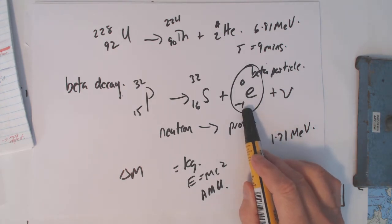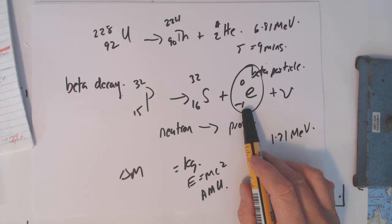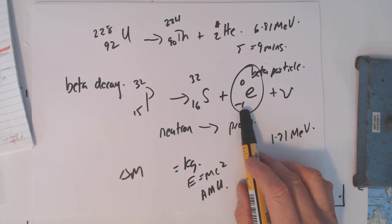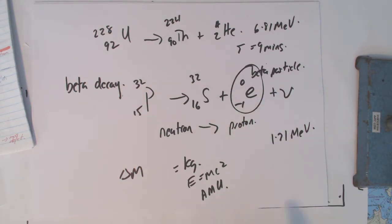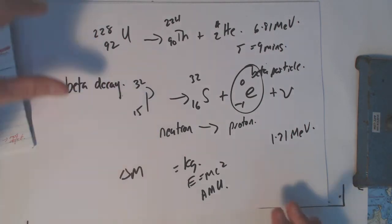Now, the beta particle travels at about 90% the speed of light, very fast, much more penetrating. You'd need aluminium or something like that to stop it. Carries a charge of negative one. Can be bent by a magnetic field because it has a charge. The gamma ray doesn't have a charge. Can't be bent by a magnetic field. So that's beta decay.